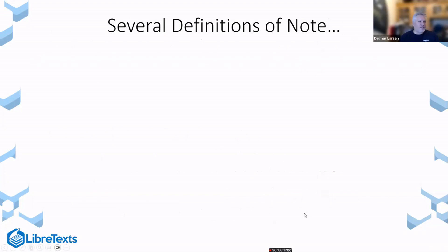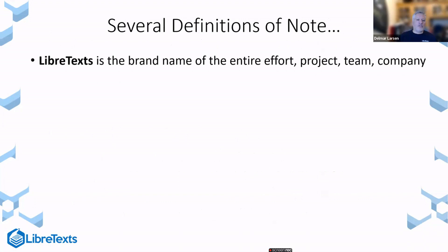A few things of note: for those of you who have been around us for a while, you understand that we tend to be a little Libra-happy. We use the term Libra in a variety of different places, and we're trying to move away from that. The term LibreText is our brand name — it describes our entire effort, our not-for-profit entity that exists outside of UC Davis, our project, our team, and the overall thrust of what we do.